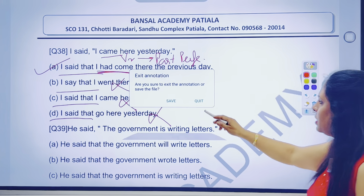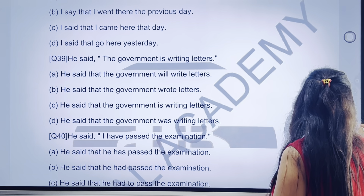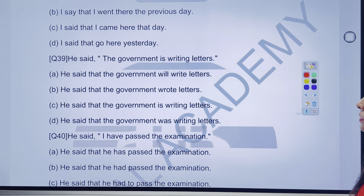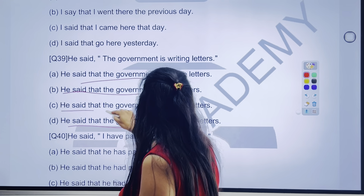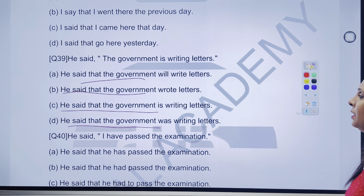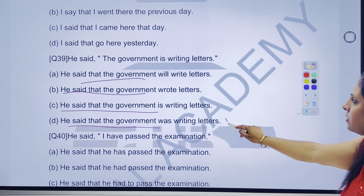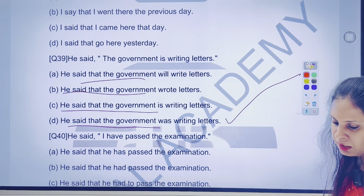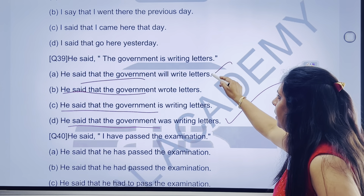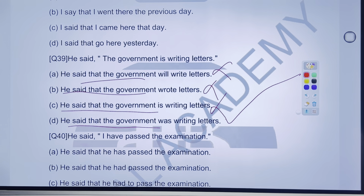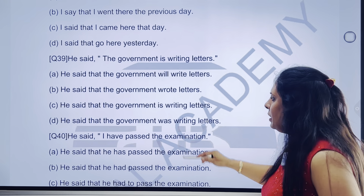I hope aap logon ke bhi answer aise hi ban rahe honge. Chalenge rahe 39th question pe. 39th ki baat ki — he said the government is writing letters. 'He said that the government' — har kisi mein same hai. Ab yahan pe 'is writing' — kis cheez ki baat karega? Present continuous — to past continuous mein change hoga — 'was writing.' Tick kar lenge ji — 39th ka A part is the right answer. He said that the government was writing letters. Yahan pe 'will' nahi aayega, yeh bhi nahi aayega, yeh bhi nahi aayega. The government is writing letters — the government was writing letters.